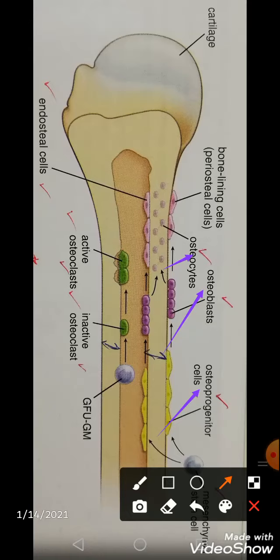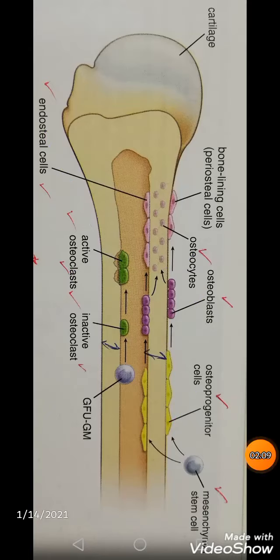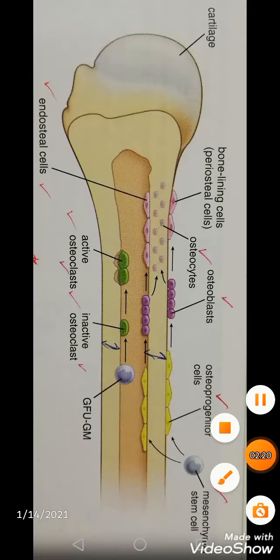You can also observe mature cells — osteocytes — and endosteal cells present along the endosteal lining, as well as active osteoclasts, which you can also call macrophages. All these cells take part in the procedure of bone repair after fracture, which is why we discussed the periosteum and endosteum as well.